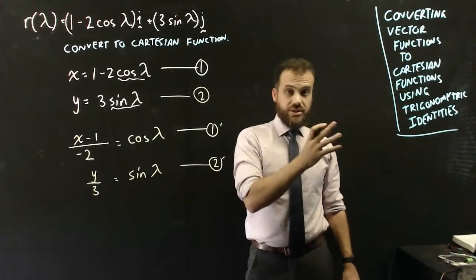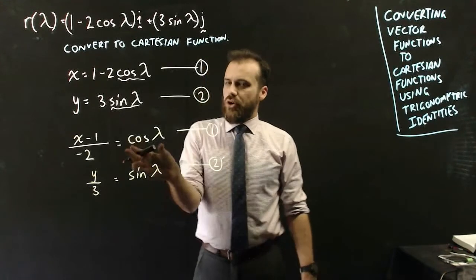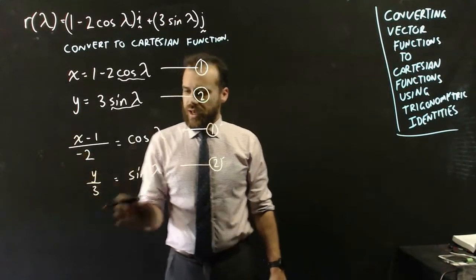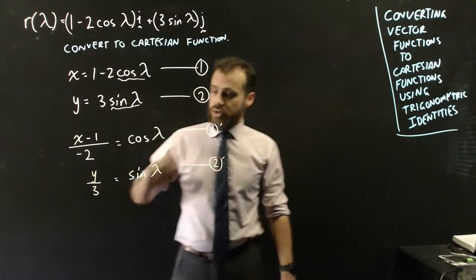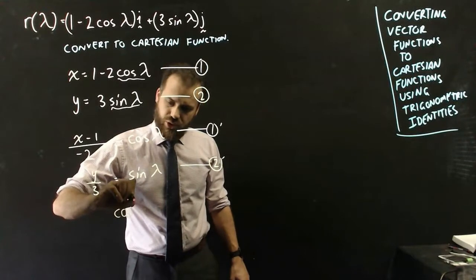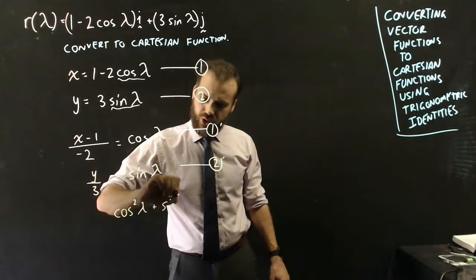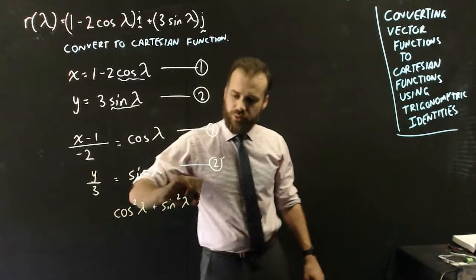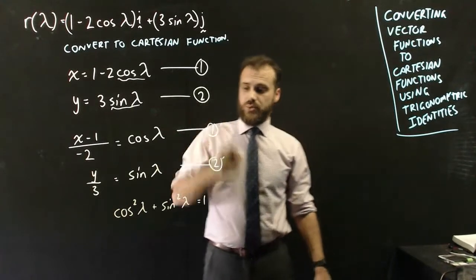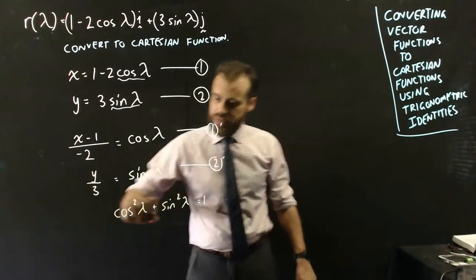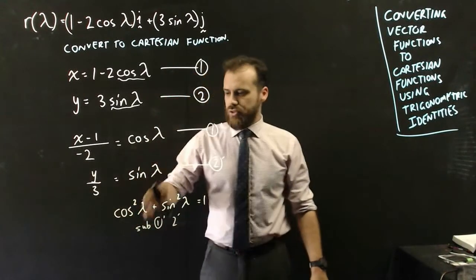Now this is where we can use our trig identity, because we can say cos lambda is equal to this, and sin lambda is equal to this. And trig identity, I know that cos squared lambda plus sin squared lambda would be equal to 1, which now means that I can start equation 1 dash and 2 dash into that, sub 1 dash and 2 dash. And when I do